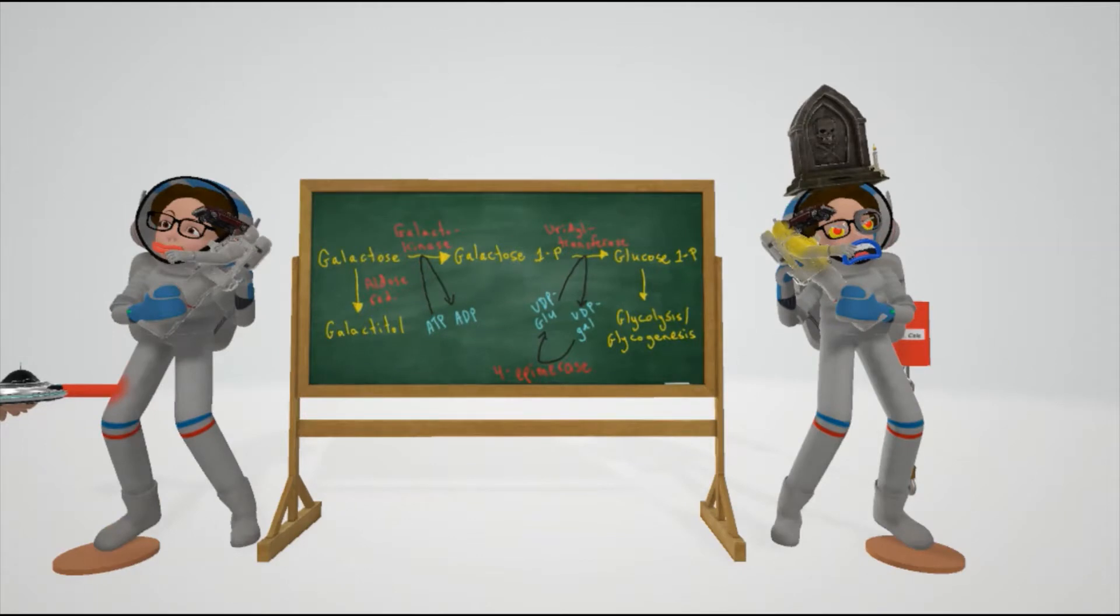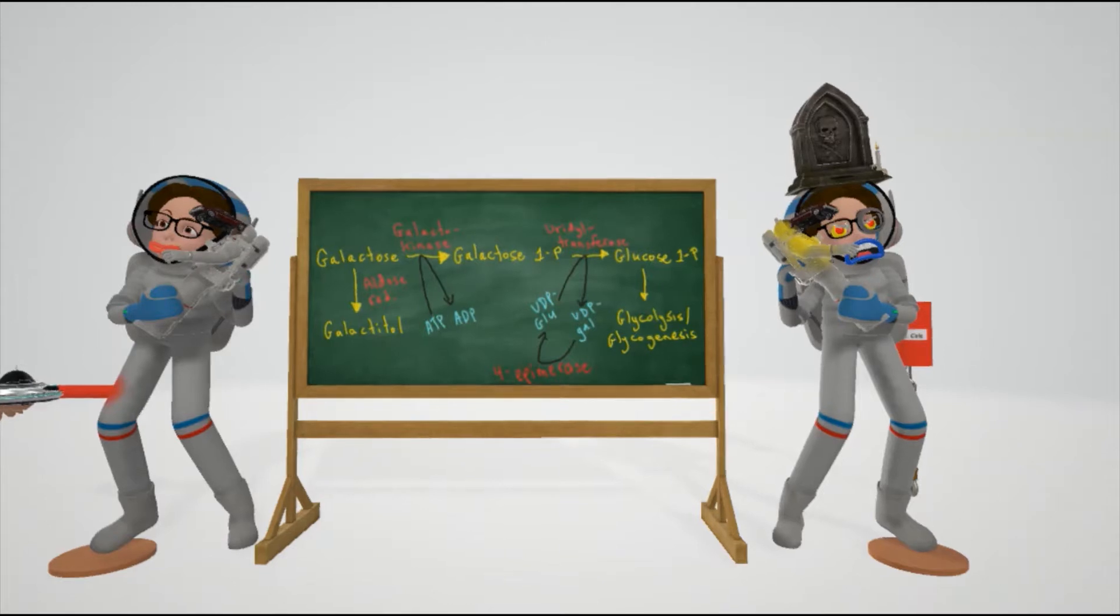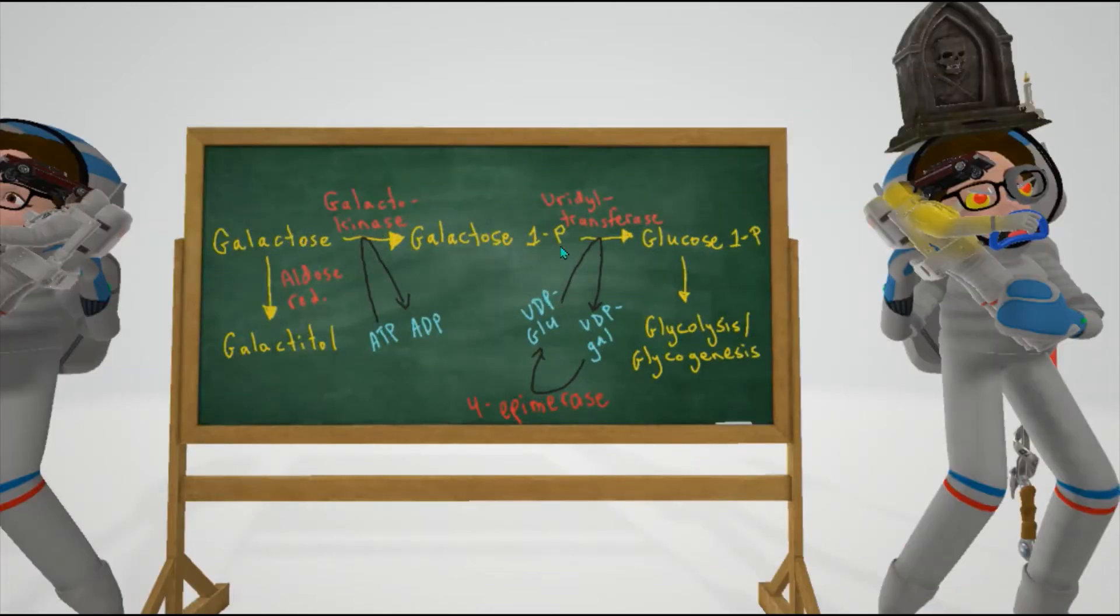Before we discuss classic galactosemia, let's review galactose metabolism. These teachers here in space are teaching that normally galactose is converted to galactose 1-phosphate, which is then converted to glucose 1-phosphate through uridyltransferase. Glucose 1-phosphate can then be brought to glycolysis or glycogenesis.